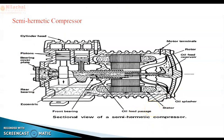Now moving to the semi-hermetic compressor. In the hermetic compressor, both hemispheres are welded, and the main disadvantage is the maintenance problem. To overcome that limitation, in the semi-hermetic compressor the motor and the casing part are separate — the motor part and the compressor are two separate units, whereas previously they were one unit.